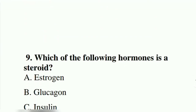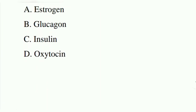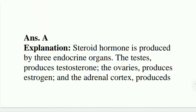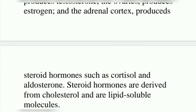Ninth question: which of the following hormones is a steroid? Option A: estrogen. Option B: glucagon. Option C: insulin. Option D: oxytocin. The answer is A, estrogen. A steroid hormone is produced by three endocrine organs: the testes produce testosterone, the ovaries produce estrogen, and the adrenal cortex produces steroid hormones such as cortisol. These are derived from cholesterol and are lipid-soluble molecules.